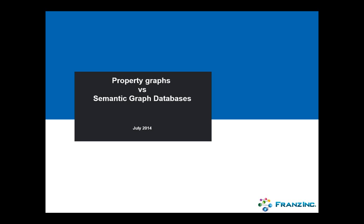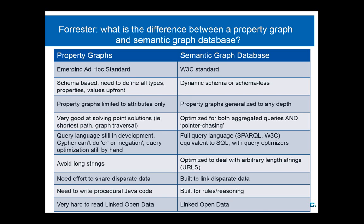Welcome, everyone. So this morning, we're going to talk about property graphs versus semantic graph databases. Recently, Forrester did another wave. You probably know who Forrester is — it's a marketing research company. Several times a year they publish a wave about new technologies. This wave is going to be published in August, and they're going to focus on NoSQL solutions and graph databases. We, as a semantic graph database company with AllegroGraph, were also invited for this wave.